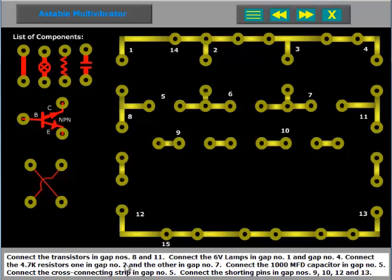Connect the transistors in gap numbers 8 and 11. Connect the 6-volt lamps in gap number 1 and gap number 4. Connect the 4.7K resistors, one in gap number 2 and the other in gap number 7.